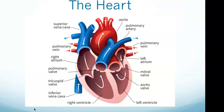The atria receive blood returning to the heart; the ventricles collect and expel blood from the heart. The atrioventricular valves separate the atria and the ventricles. The tricuspid valve separates the right atrium and the right ventricle, and the mitral valve separates the left atrium and the left ventricle.